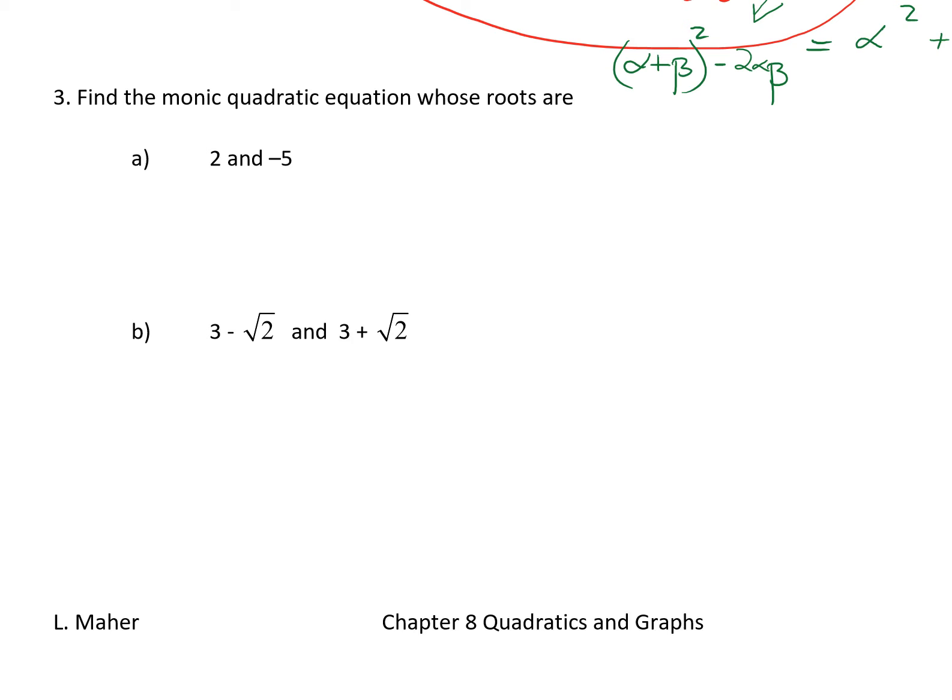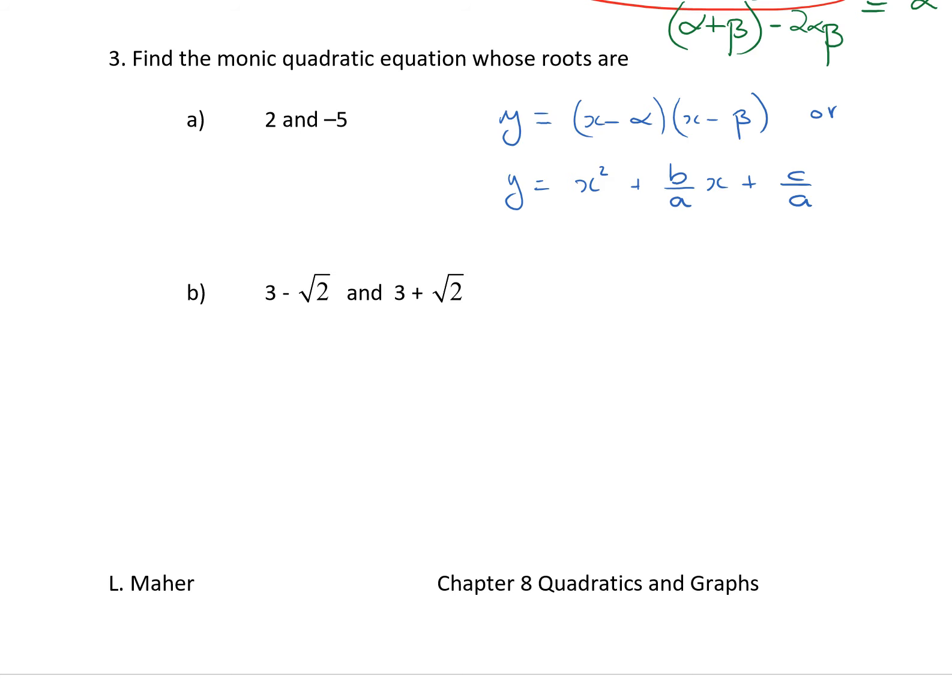Now, we know two things. A monic, and this question did suggest monic, a monic quadratic could always be written in the format x minus alpha, x minus beta.